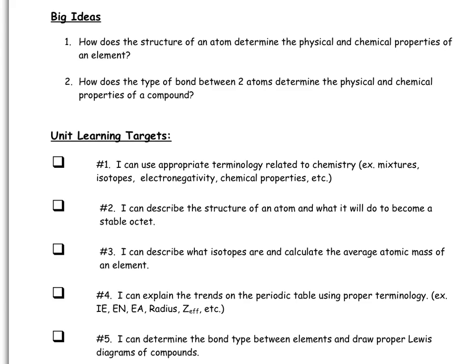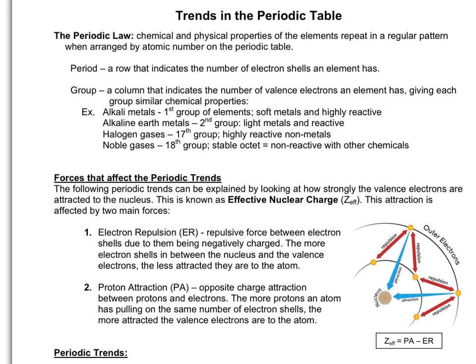In this lesson, we'll discuss big idea number one: how does the structure of an atom determine the physical and chemical properties of an element, and focus specifically on learning target number four, explaining the trends on the periodic table. Here's the note we'll be discussing today, trends in the periodic table.